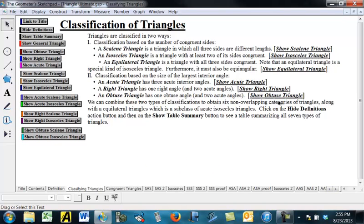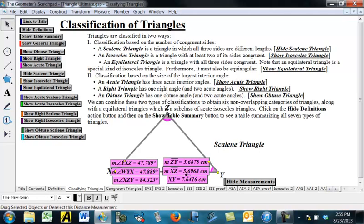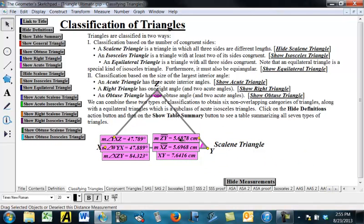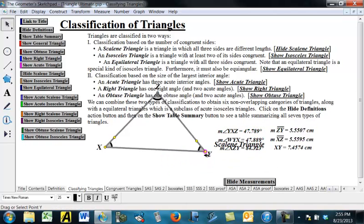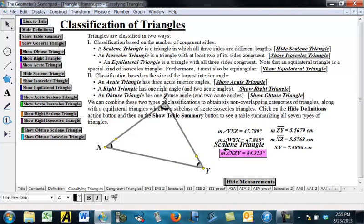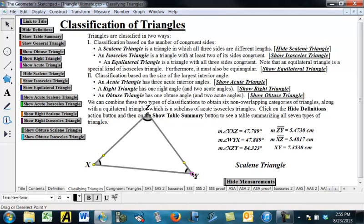We can also base them on how many sides are the same length. So, a scalene triangle, all of the lengths of the sides, and, of course, then, because of that, all the lengths of the angles will be different lengths. So, there's some lengths over there for the scalene triangle, and you can see that this one is constructed in such a way so that the lengths are always all different. So, we get three different angle measurements and three different length measurements.